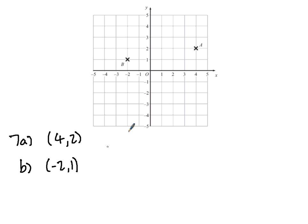On the grid, mark the point (0, −4) and label it C. 0 first means we don't go across at all. Minus 4 means we go down 4 spaces. Mark with a cross and put a C.